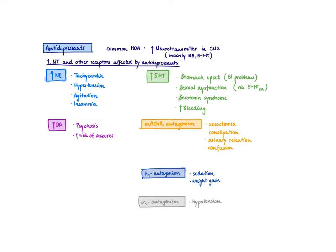What happens when you increase serotonin? You should remember the three S's for increasing serotonin: stomach upset, sexual dysfunction, and serotonin syndrome. Stomach upset and all kinds of GI problems are a very predictable effect of increasing serotonin. 90% of the serotonin is found in the GI tract, and there are 5-HT4 receptors that can be stimulated and increase motility.